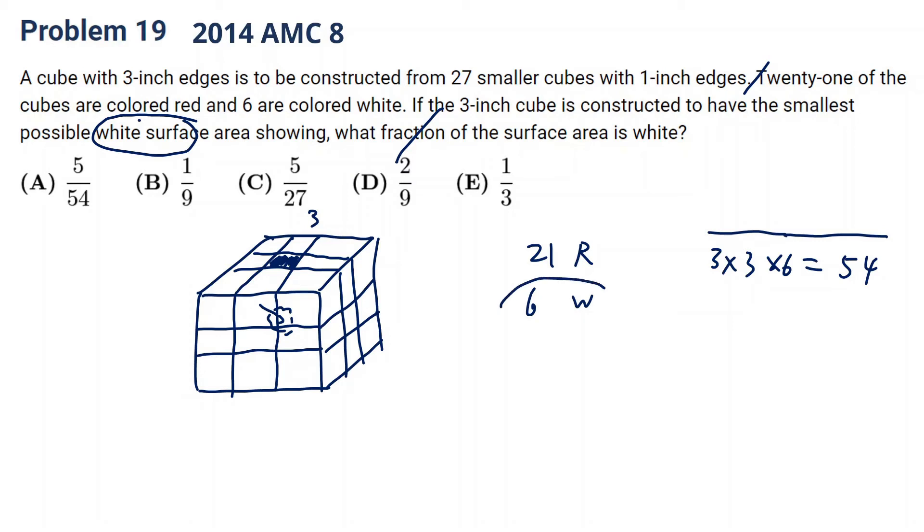So here we have six white. We put one in the inner core and put the other five with only one face. So in total, there will be five faces shown. So the answer will be 5 over 54. This one is a little bit tricky. Some people might do 6 over 54. So that will be the wrong answer.